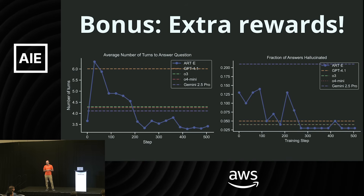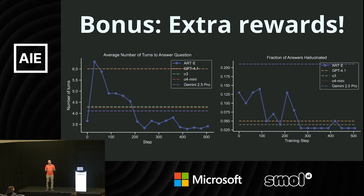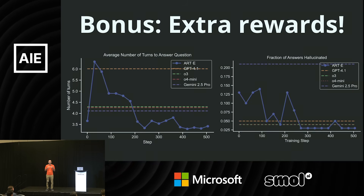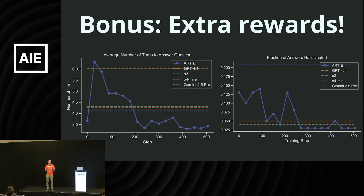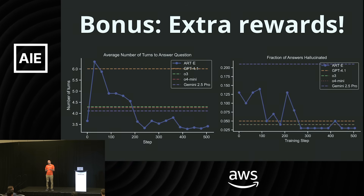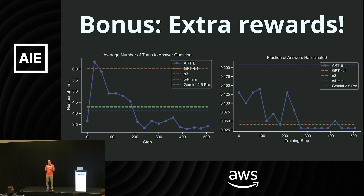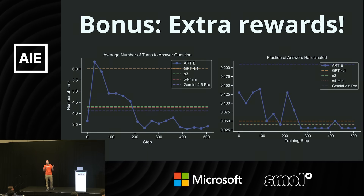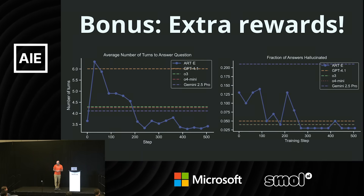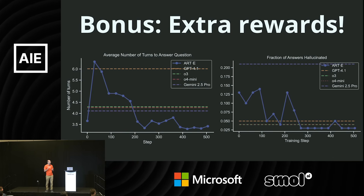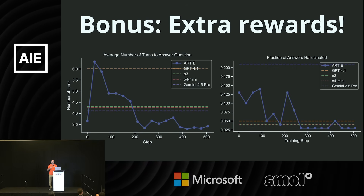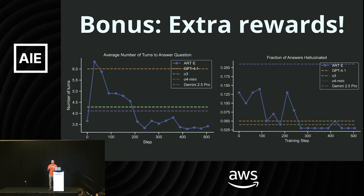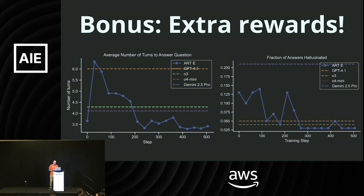Another extra reward component was discouraging hallucinations. The best outcome is the correct answer, but if the agent can't find it, it's much better to say 'I don't know' than to make up an answer. So we penalized it more heavily if the reward model said the answer was wrong and it had tried to give one, versus if it simply said 'I don't know, I can't solve this problem.' Compared to any of the prompted models including O3, we ended up with a significantly lower hallucination rate, because that was part of our reward function. You can jointly optimize all of these things at the same time, which is super powerful.